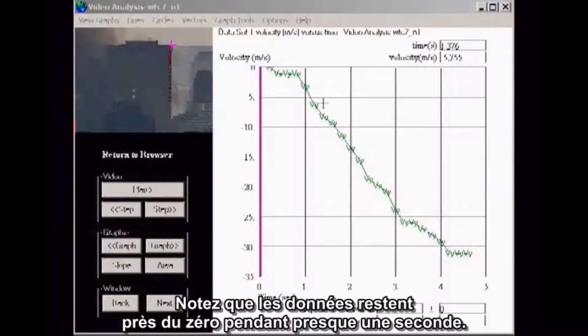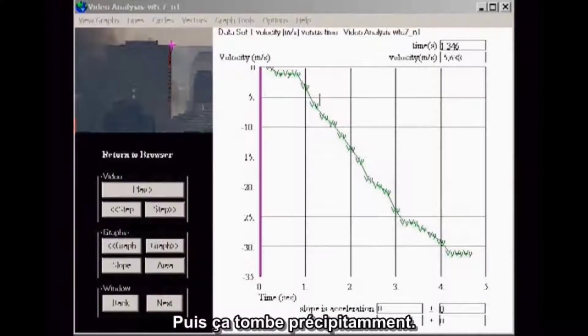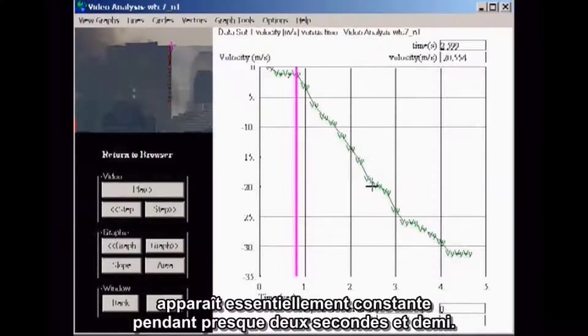Notice that the data hovers close to zero for nearly a second, and then it drops precipitously. From the moment of the drop, the slope of the line appears essentially constant for about 2.5 seconds.